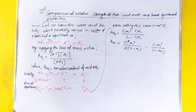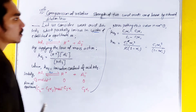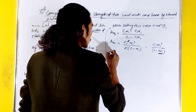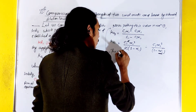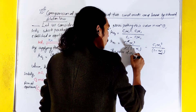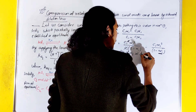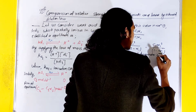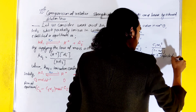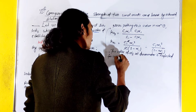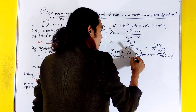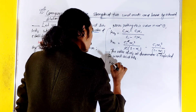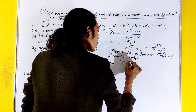For a weak acid, α1 in the denominator is neglected, meaning 1 minus α1 is approximately equal to 1.